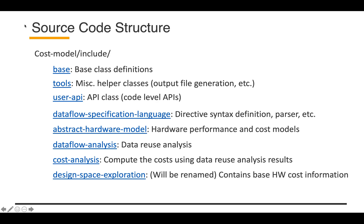User API has the API classes, which are the code level APIs. The data flow specification language has the directive syntax definitions and parser. Abstract hardware model has hardware performance and cost models. Data flow analysis includes the data reuse analysis engine.